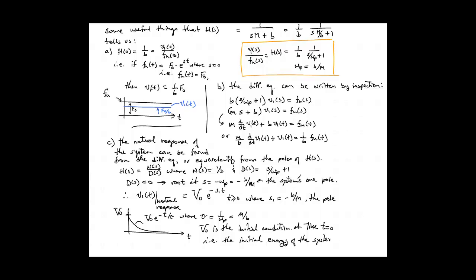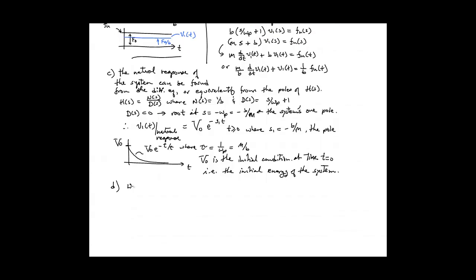Okay, third, no fourth, we can also draw the step response for the system. And this comes by combining a and c. So in other words, the step response after time zero, it's basically a constant input, just like what we considered in case a. But